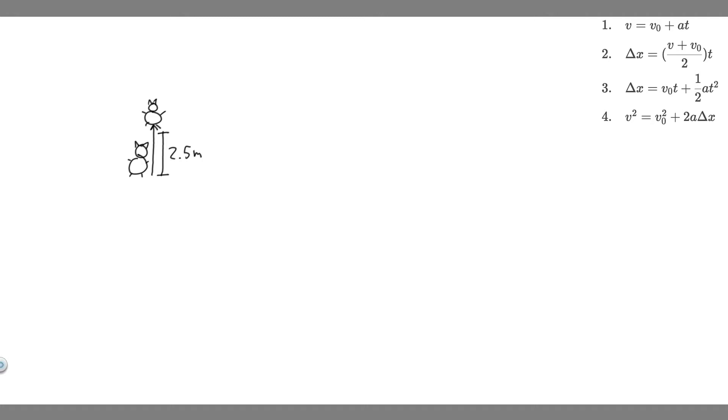The first thing you always want to do is draw what's going on. So we have this kangaroo, and we know it's going to jump with some speed. So v sub 0, we're just going to say is question mark because we don't know. And so it's going to jump with some speed, and we know it can jump 2.5 meters in the air.